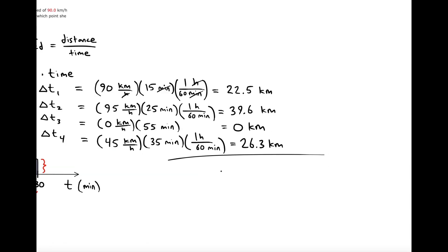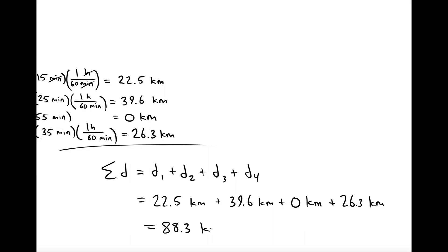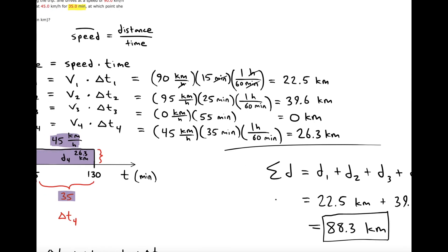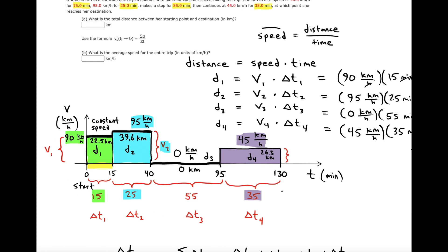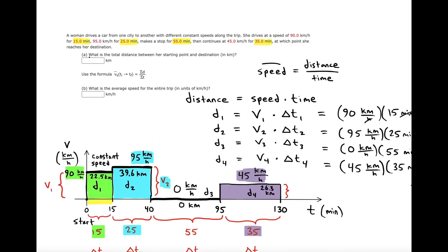Now we can add up all the distances: D1 + D2 + D3 + D4. The total comes to about 88.3 kilometers, which is the total distance traveled in her trip, answering the first question.